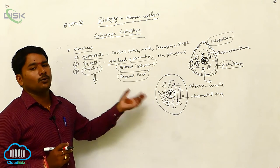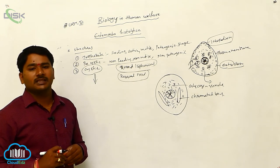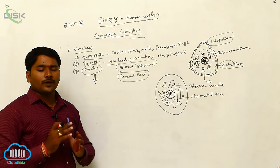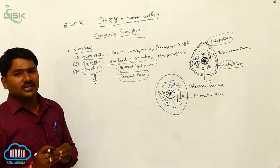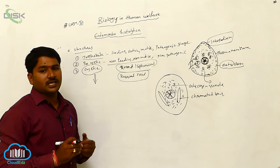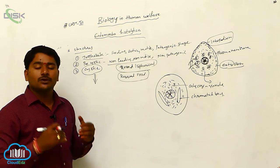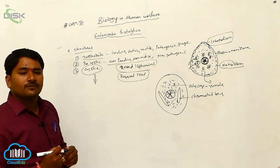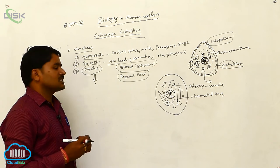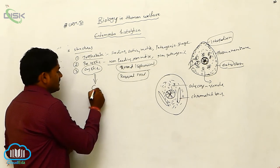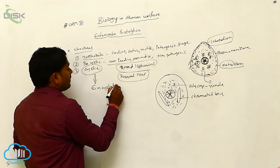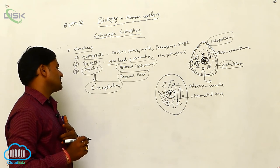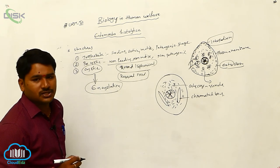The cystic stage is also an inactive round form, covered by a thin, delicate, resistant cyst. In order to face the intestinal conditions in the human being, the precystic stage develops a cyst around its structure. The process of forming this delicate cyst is called encystation.